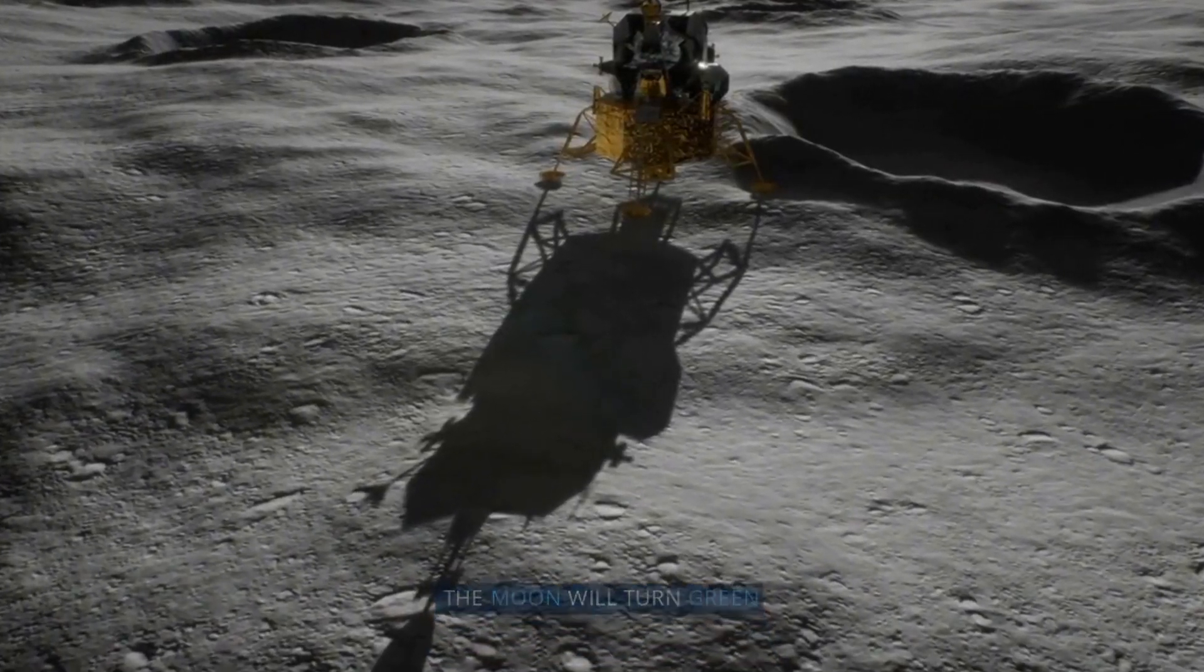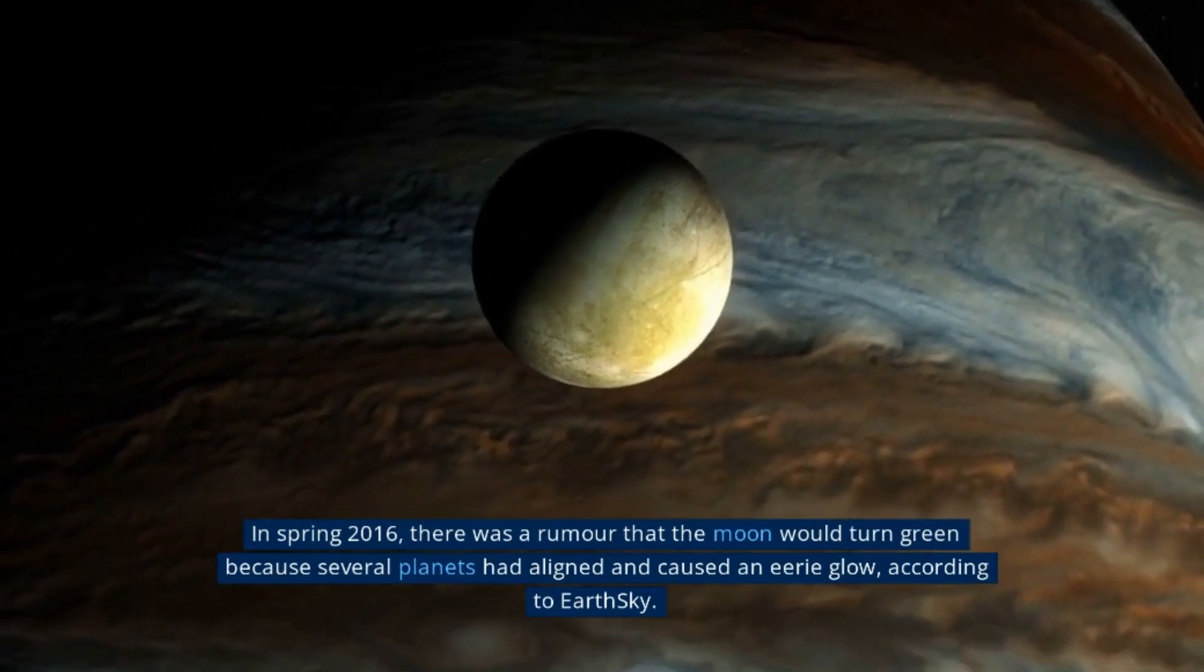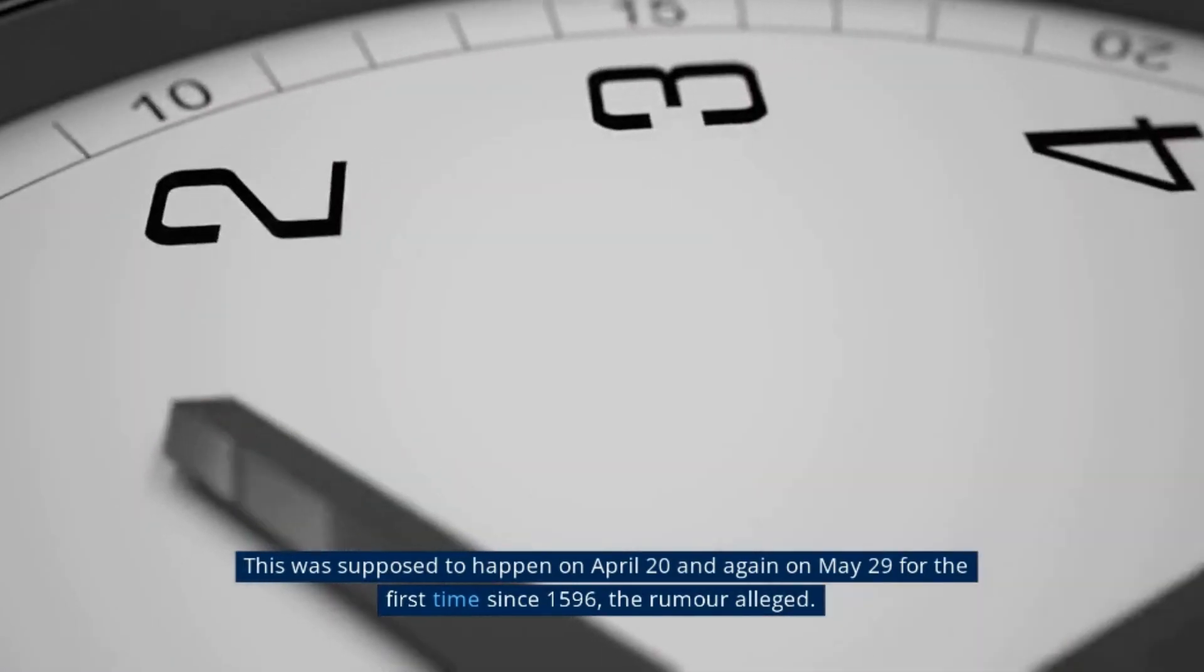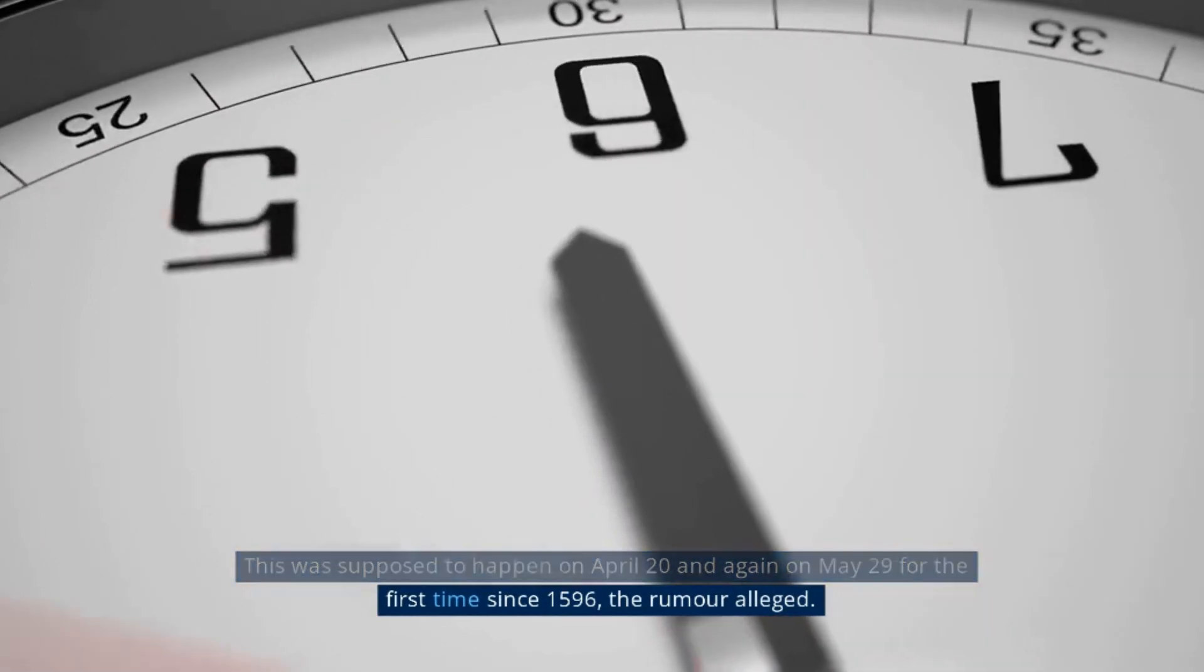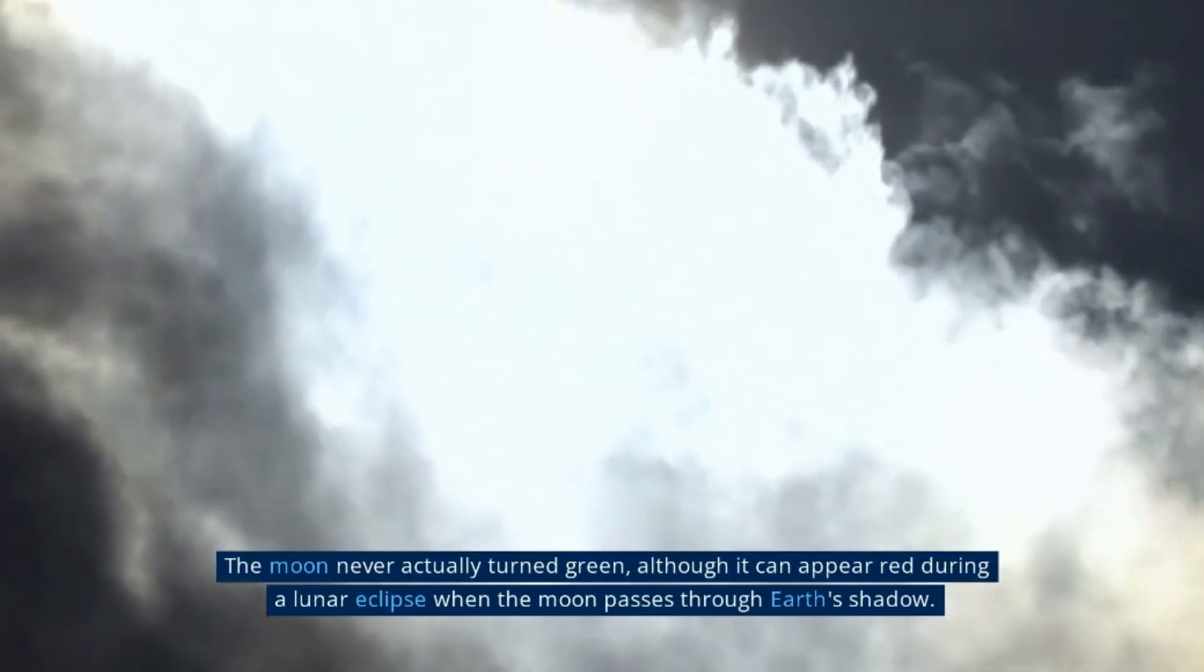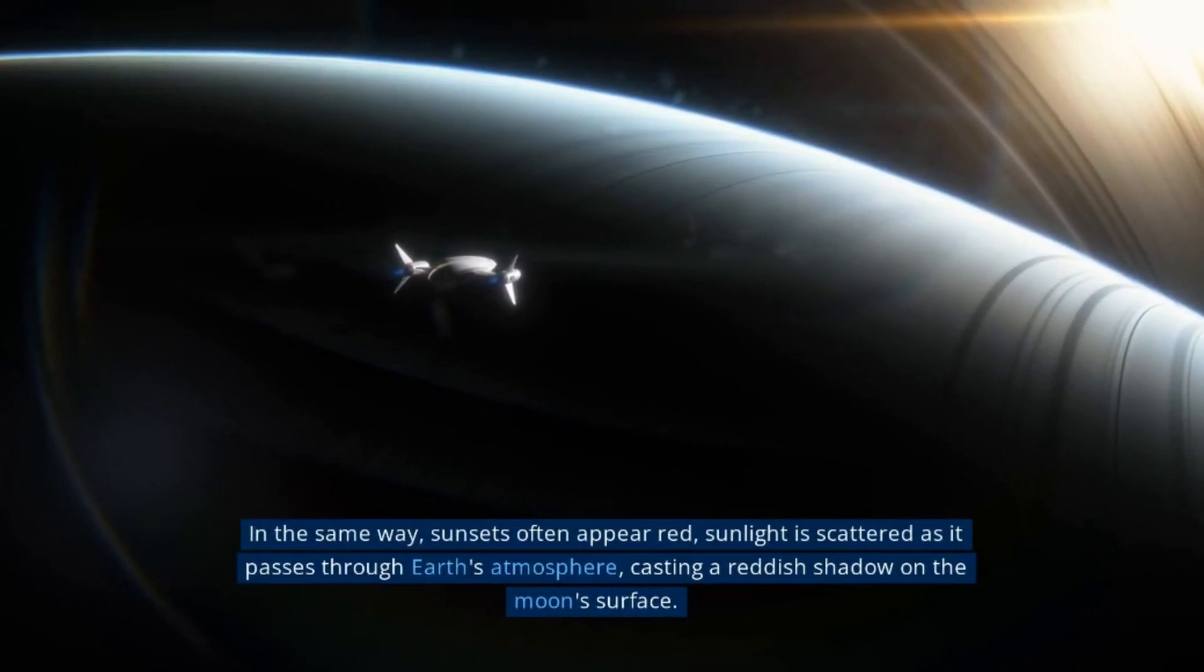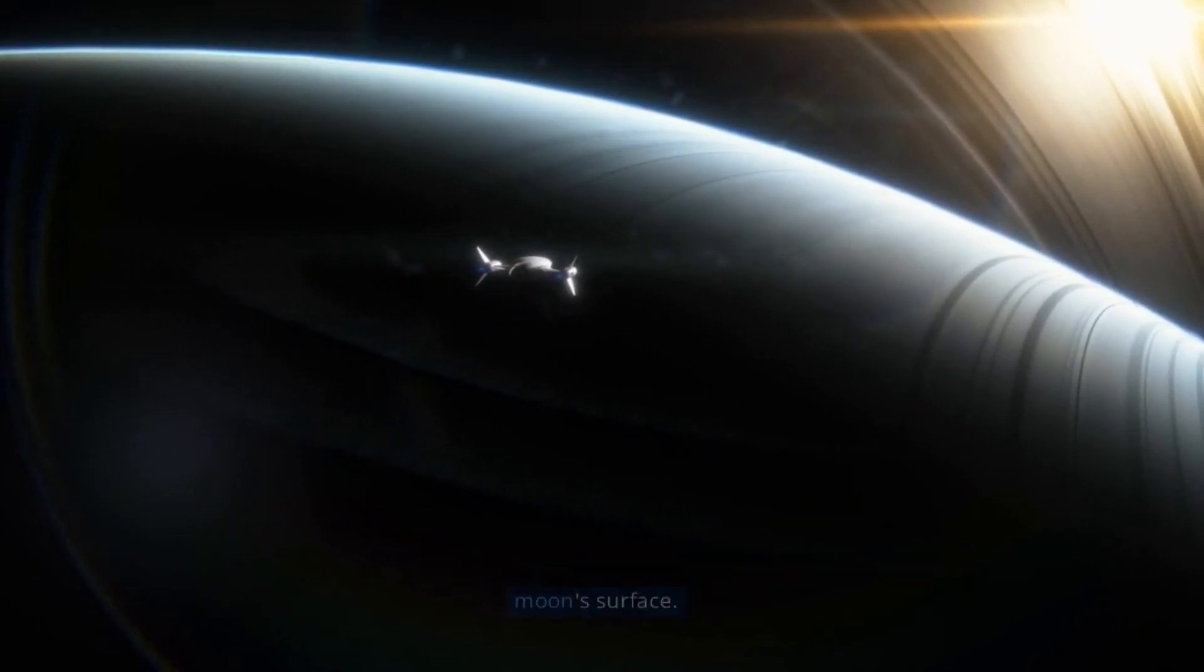The Moon Will Turn Green. In spring 2016, there was a rumor that the moon would turn green because several planets had aligned and caused an eerie glow. This was supposed to happen on April 20 and again on May 29 for the first time since 1596. The moon never actually turned green, although it can appear red during a lunar eclipse when the moon passes through Earth's shadow. In the same way, sunsets often appear red. Sunlight is scattered as it passes through Earth's atmosphere, casting a reddish shadow on the moon's surface.